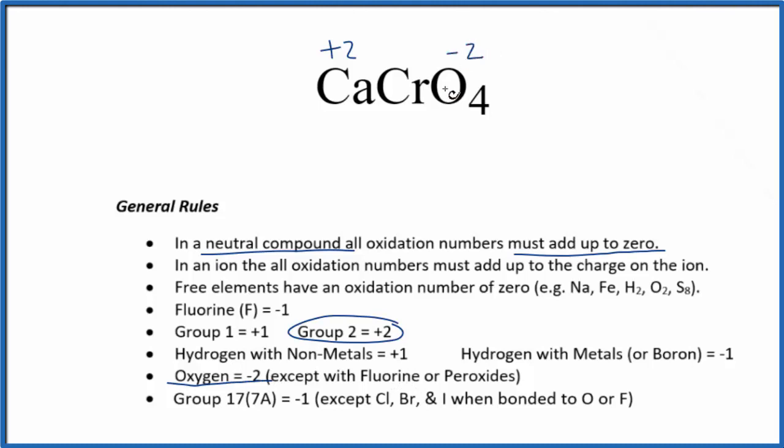We just need to figure out what the Cr is going to be for this whole thing to add up to zero. We have -8 from oxygen and +2 from calcium, so chromium has to be +6. That +6 and +2 cancels out the four times -2.